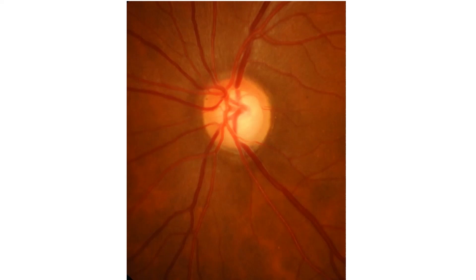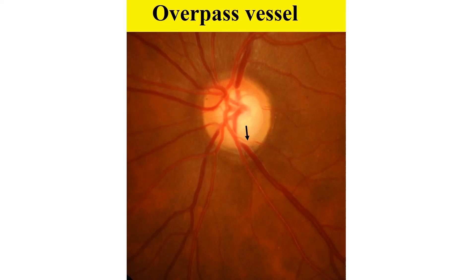As neuro-retinal rim is lost, the vessels appear to hang in the space over an area of lost neural tissue. This characteristic of retinal vessels bridging an optic cup resembles the overpasses at a road junction, hence the name bridging or overpassing of vessels.